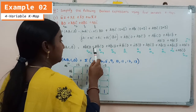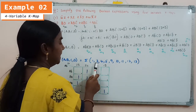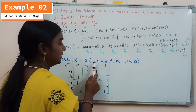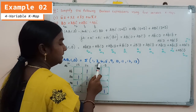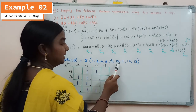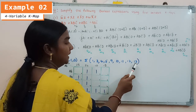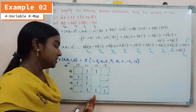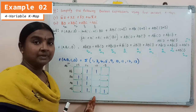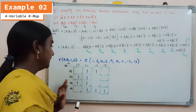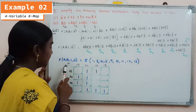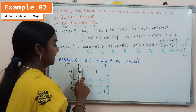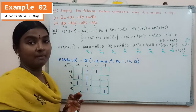After converting the product terms into minterms, the minterms present in this function are: 1, 3, 4, 5, 9, 10, 11, 12, 13. Since there are 4 variables, we use a 4-variable K-map with ab on the row side and cd on the column side. For each minterm present, we assign 1 in the respective cell.